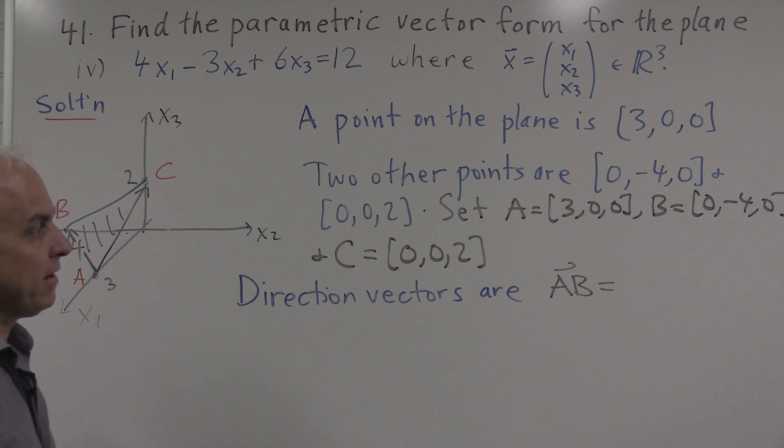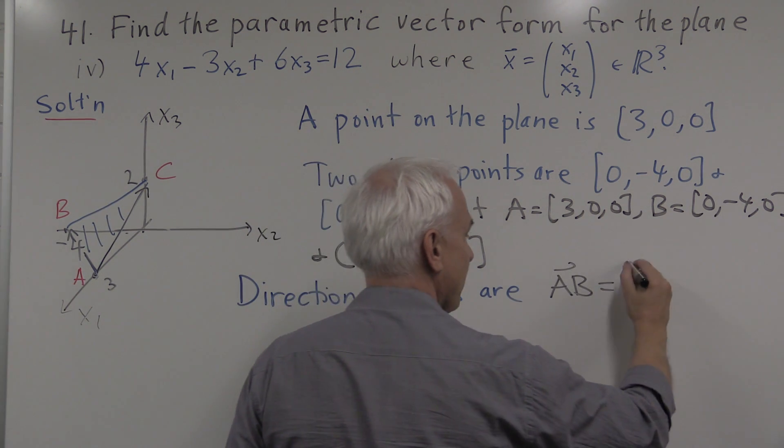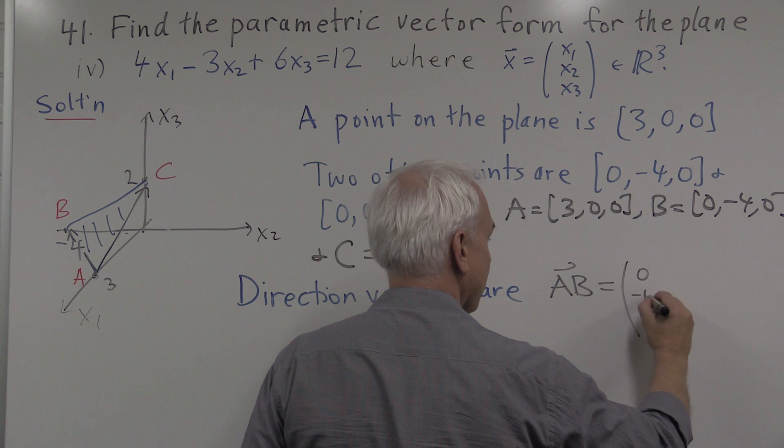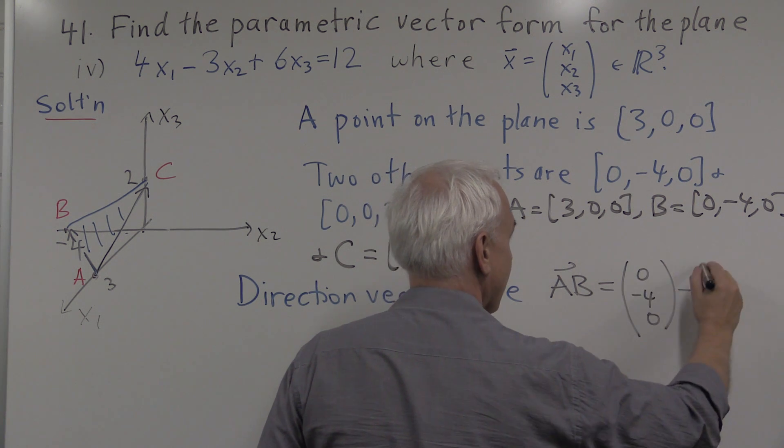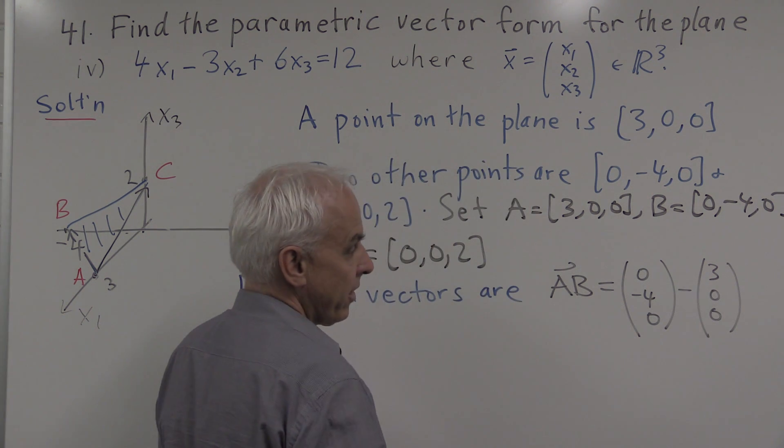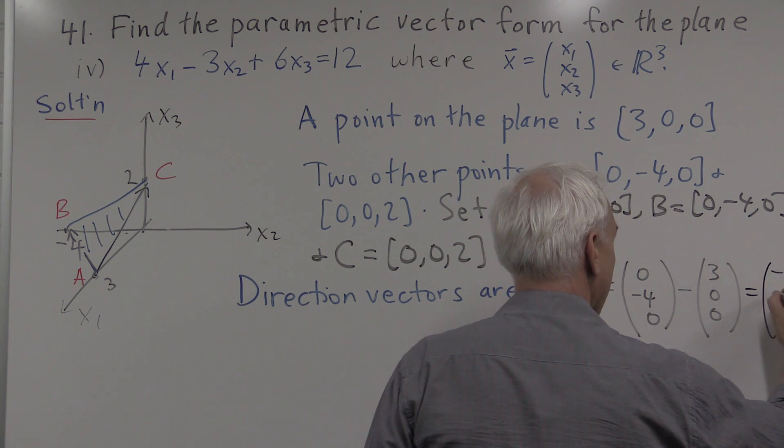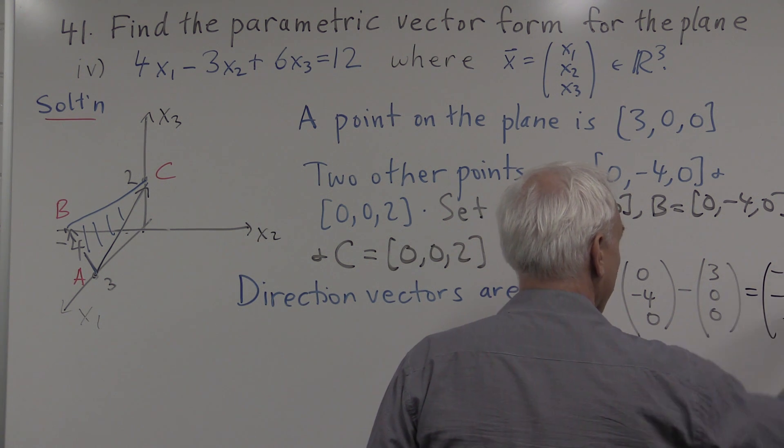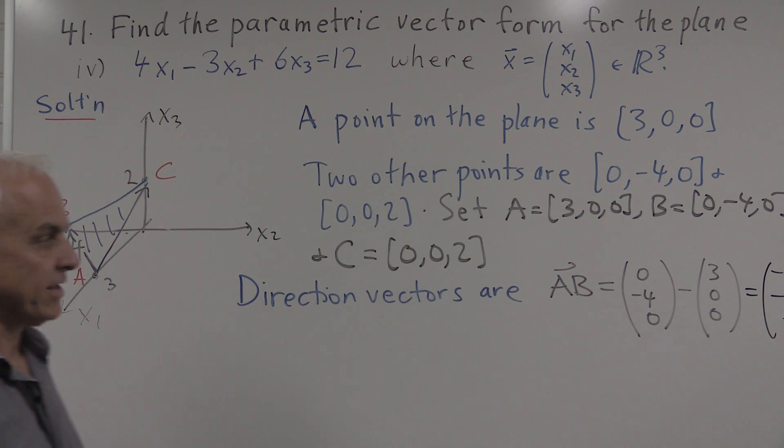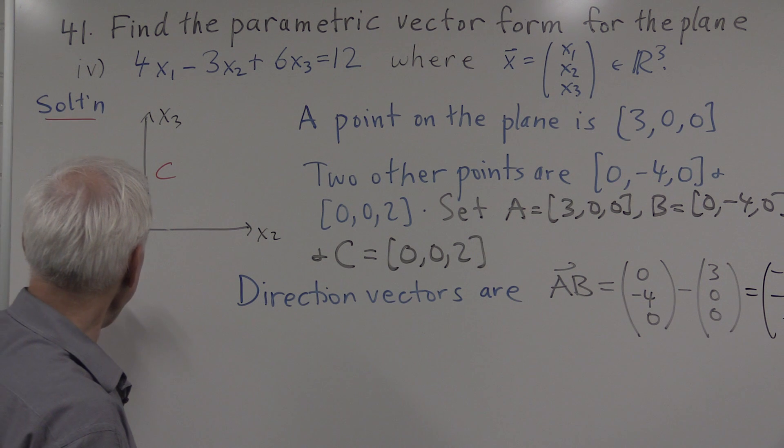AB would be the difference between the coordinate vectors of B and A, which we know how to do by now. We take the coordinate vector for B and subtract the coordinate vector for A, giving us, all together, minus three, minus four, zero. So that's the vector that describes going from A to B.